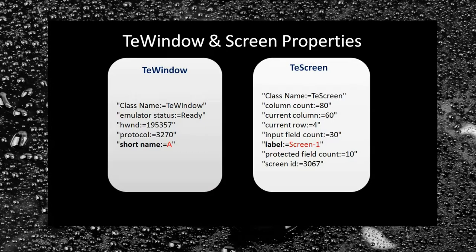Now let's look at the TE Window and TE Screen properties. I will use the descriptive programming approach to automate the mainframe application to avoid maintenance of object repositories. The TE Window can be identified using its short name, and a TE Screen can be identified by its label property. If you want to know more about descriptive programming, you can refer to my post — the link is in the description of this video.